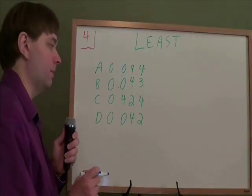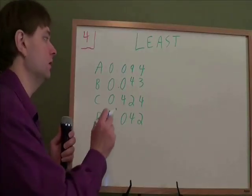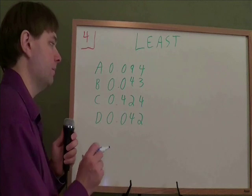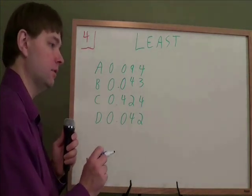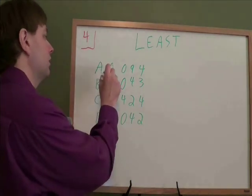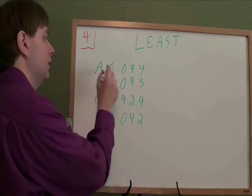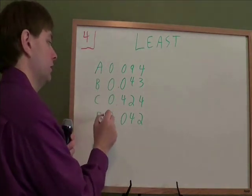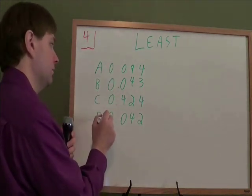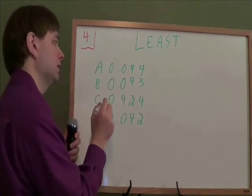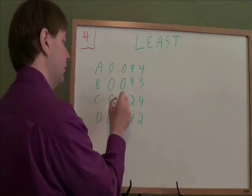In problem four, we are comparing decimals to see which of these is the least. When you're comparing to see who's the least or who's the greatest, you start at the left side. So at the left side, we have 0, 0, 0, and 0. They're all tied, so we just move on to the next decimal place. Next, we have 0, 0, 4, and 0.